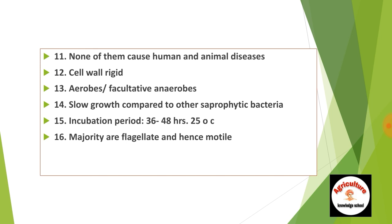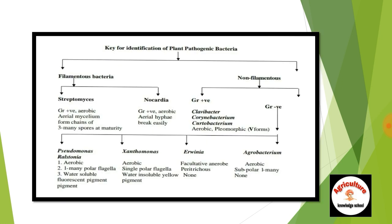Number twelve — cell wall is rigid. Number thirteen — aerobes or facultative anaerobes. Number fourteen — slow growth compared to other saprophytic bacteria. Number fifteen — incubation period after infection is 36 to 48 hours at a temperature of 25 degrees Celsius. Number sixteen — majority are flagellate and hence motile. Bacterial motility depends on the flagella, which is a key for identification of plant pathogenic bacteria.